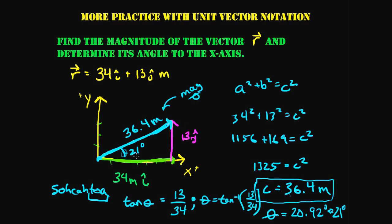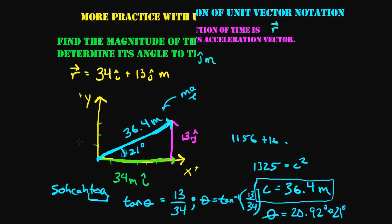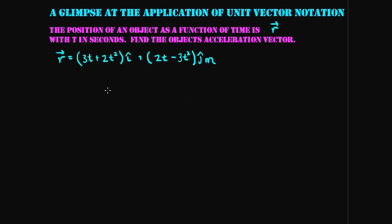So in the first example we went from a magnitude and angle and broke it into unit vectors, and in this one we went from unit vectors back to the resultant vector with magnitude 36.4 meters at 21 degrees above the x-axis. Now that we know how to take a vector and break it into components in unit vector notation, let's look at applications of this.